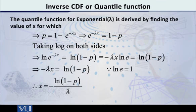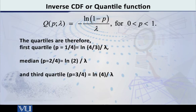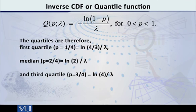This is the quantile — this is the p-th quantile. We denote this by capital Q as a function of p, so that we can say this is the quantile function. Therefore, Q(p; λ) = −ln(1 − p) / λ, where p lies between 0 and 1.